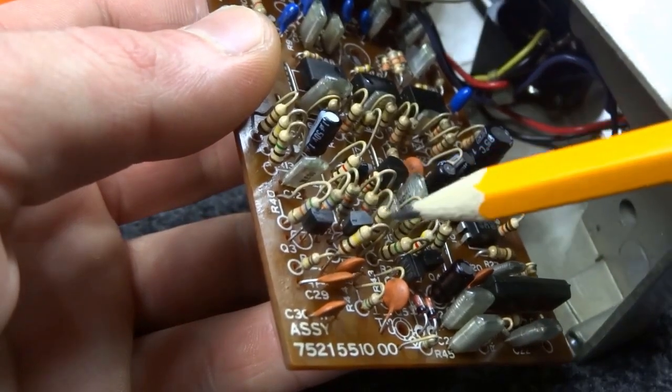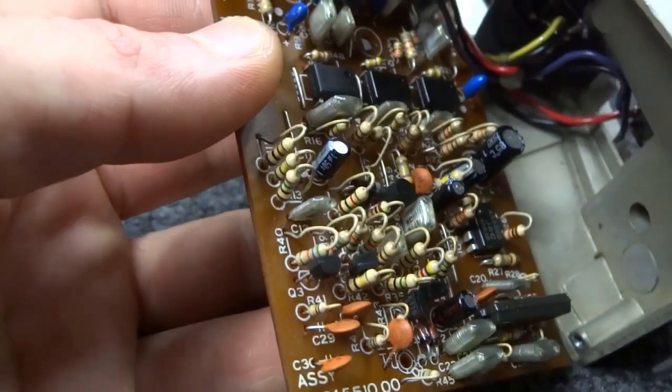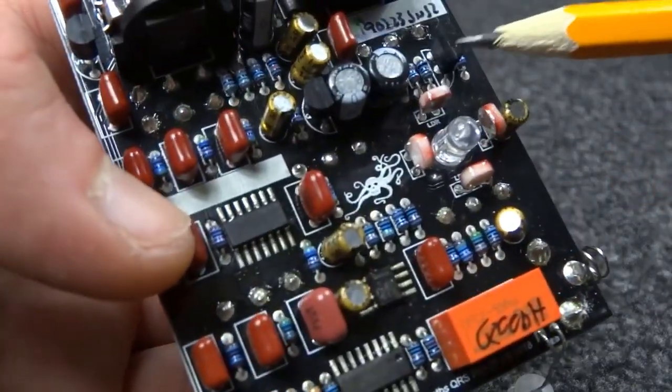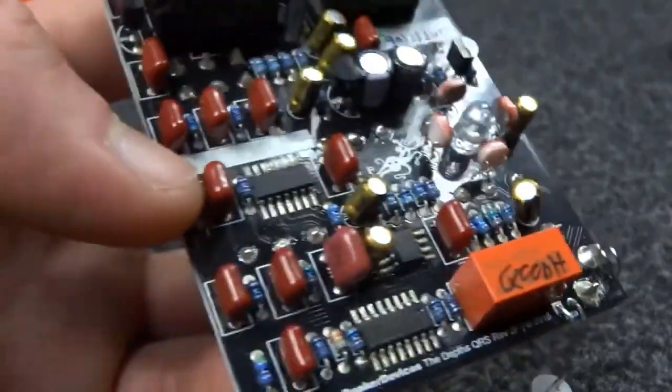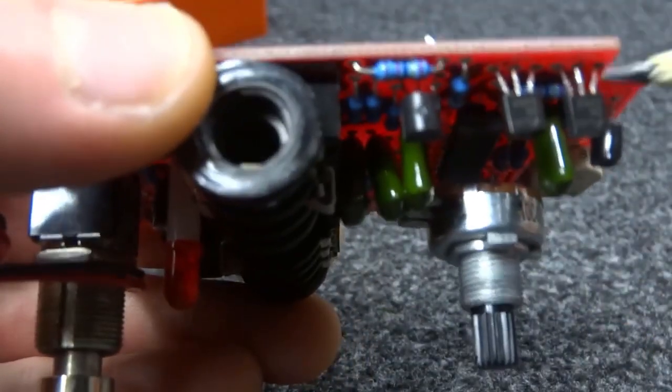Those black parts with three legs are transistors. In pedals usually used as your guitar signal amplifiers or electrically controlled switches. There are a lot of different models and all can act different and be more suitable for switching or amplifying purposes.